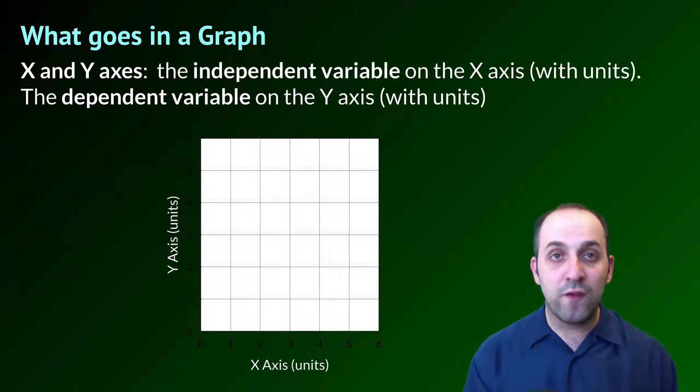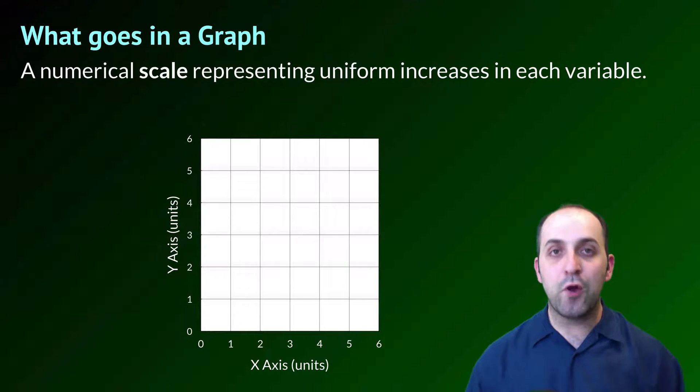When we're constructing a graph, it's important that we pay attention to all of the elements that should go into the graph. The first is the x and the y-axes, of course. The independent variable is always going to go on the x-axis and we should put our units as well listed underneath them. The dependent variable is always going to go on our y-axis again with units. We're then going to put in a numerical scale that's going to represent uniform increases in each variable. As you can see here, we have uniform increases in each of the variables given. Each box is equal to an increase of one.